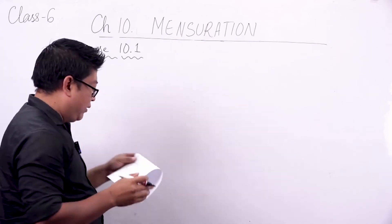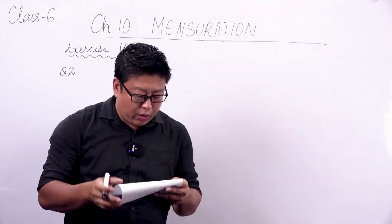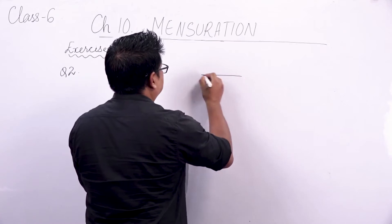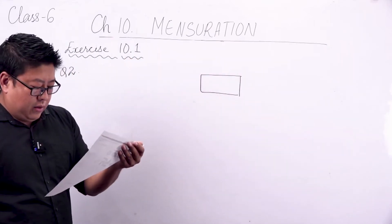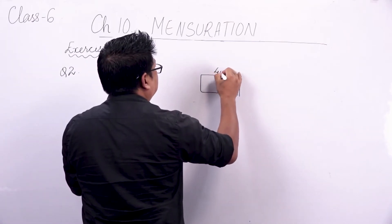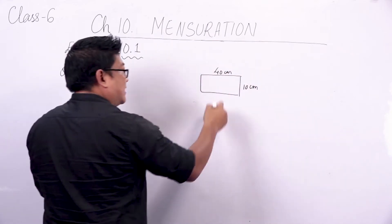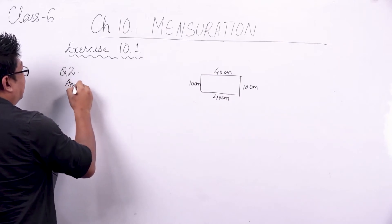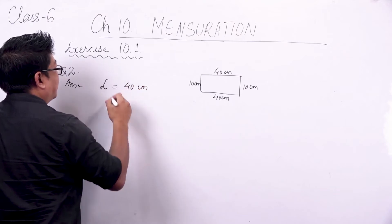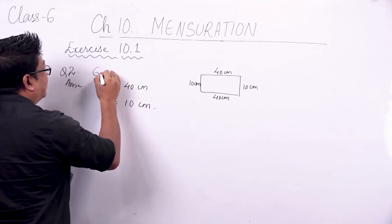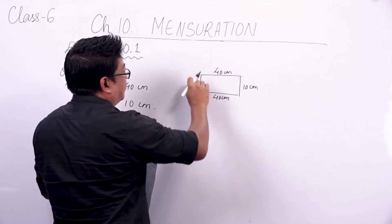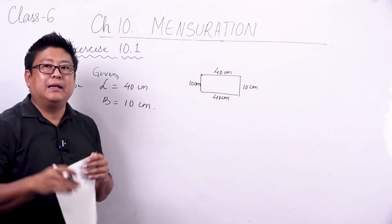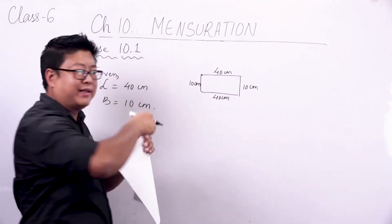Let's look at question number 2. The lid of a rectangular box of sides 40 cm by 10 cm is sealed all around with tape. What is the length of the tape required? It is a rectangle, so this side is 40 cm and 10 cm. Since opposite sides of a rectangle are equal, the other sides will also be 40 cm and 10 cm. The length L is 40 cm and breadth is 10 cm. To roll the tape around it and seal it, you need to find the perimeter — that gives the total length of tape used.